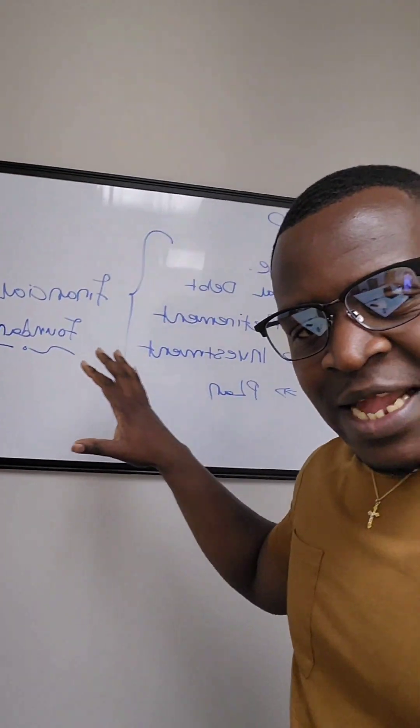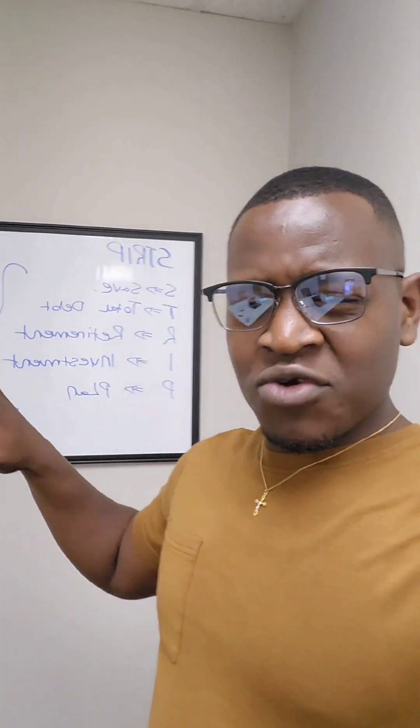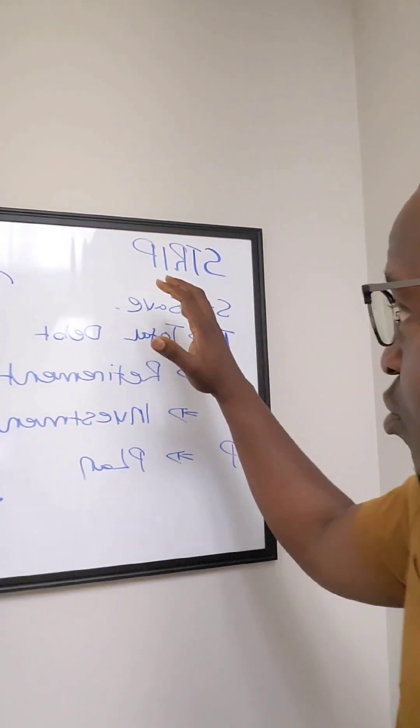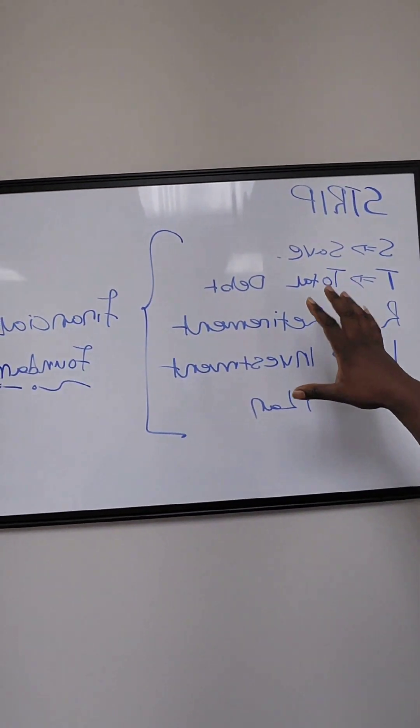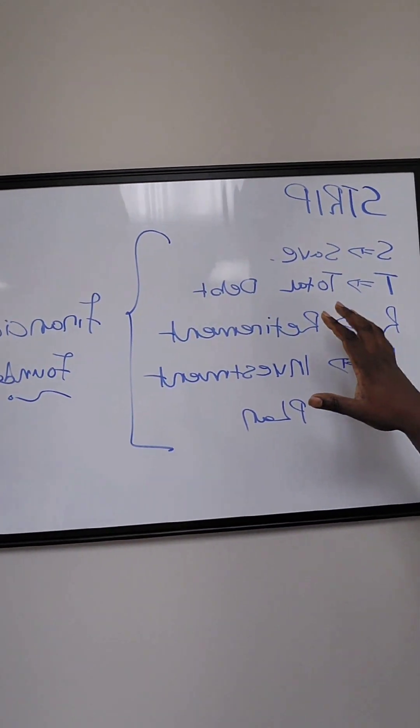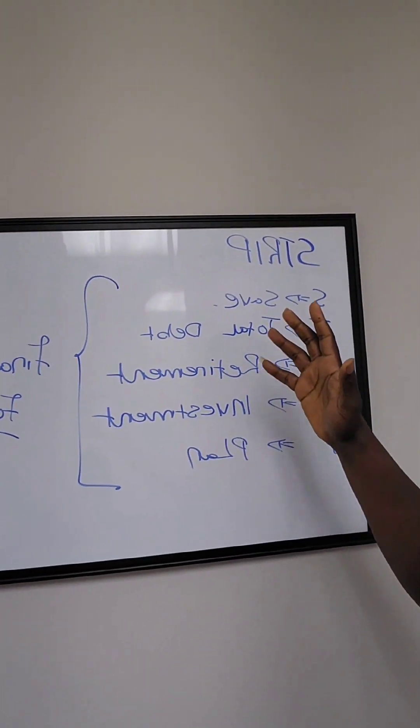I've taken some time to refine it, to really study it and understand how it works, and I think that it could be very beneficial to a lot of people out there. If you're looking to take control of your money and understand how to fully structure it, this formula right here can really help you do a lot of that. It's called STRIP.